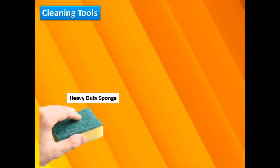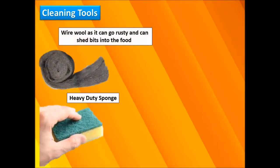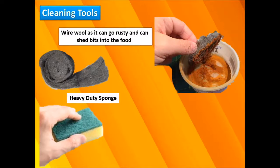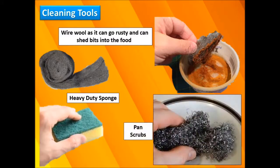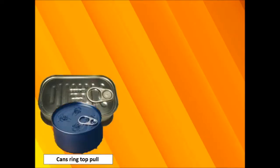Cleaning tools can cause very critical physical contamination of the product, such as wire and heavy duty sponge sources. Wire wool is very bad for cleaning food contact surfaces because it can go rusty and shed bits into the food. Pen scraps are also very bad in food processing areas.